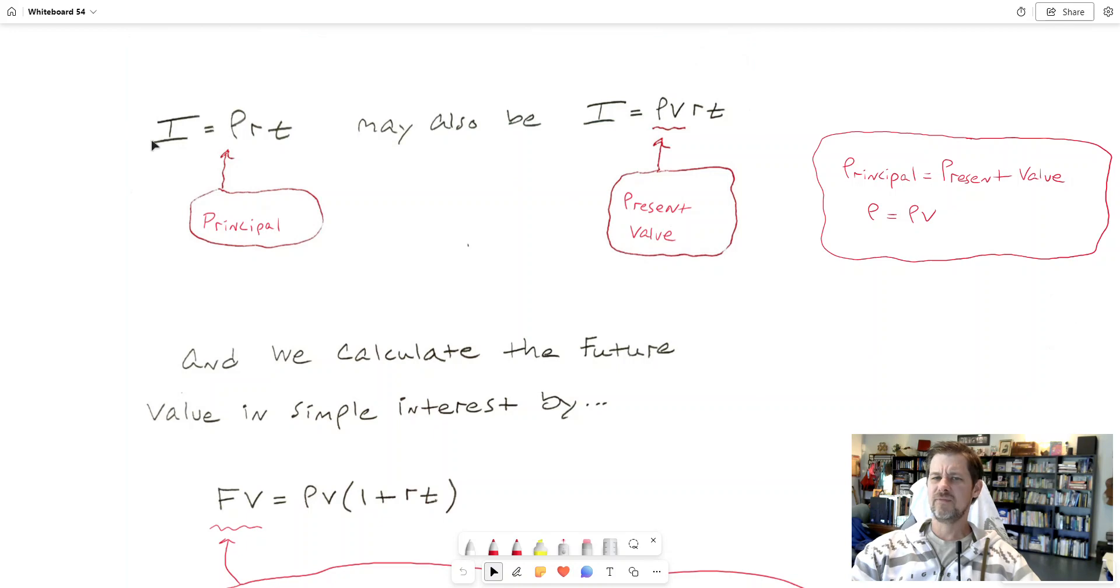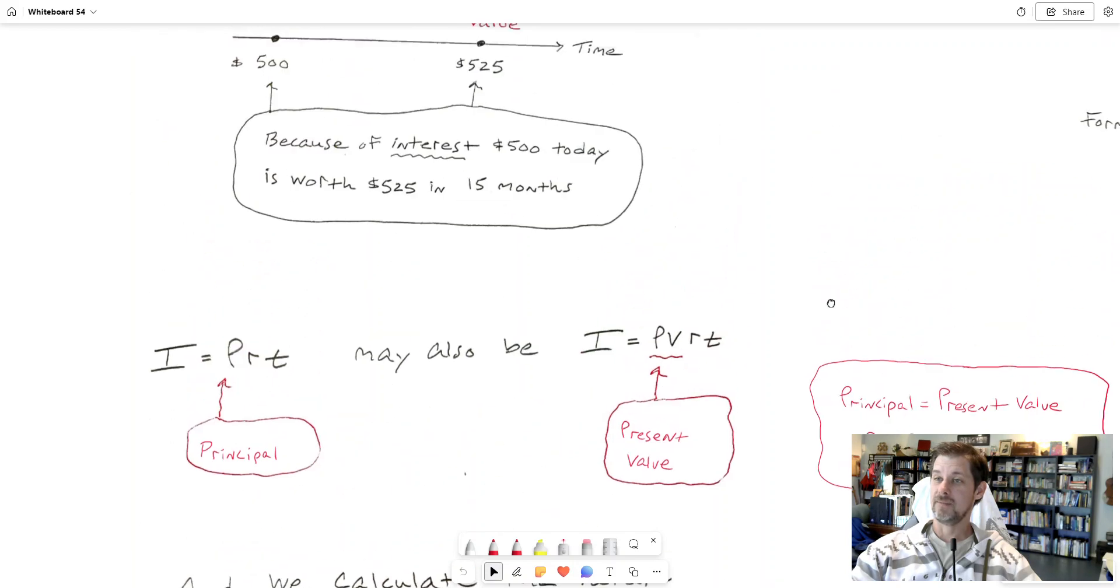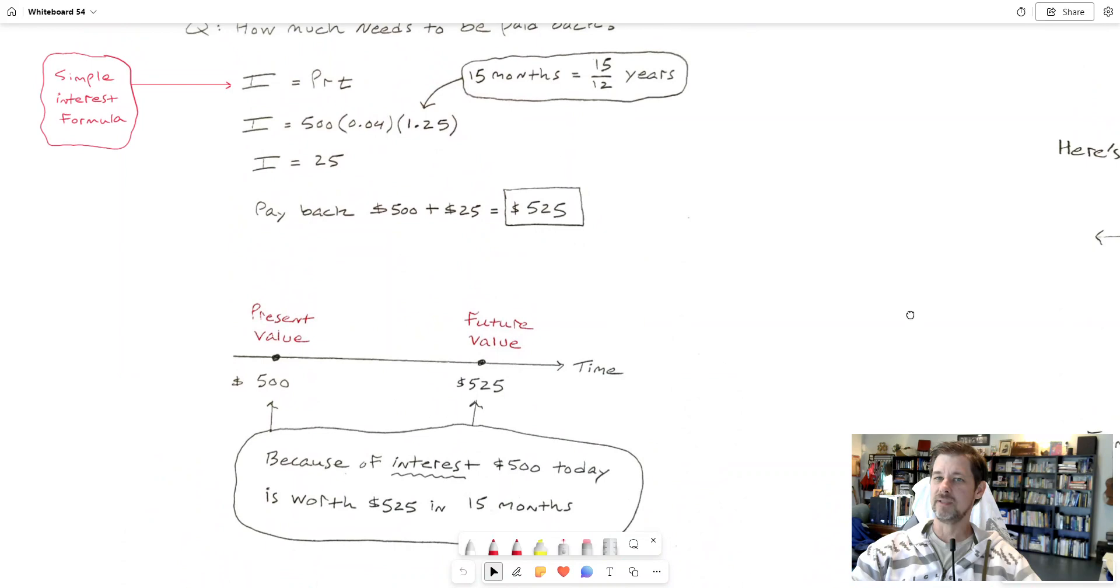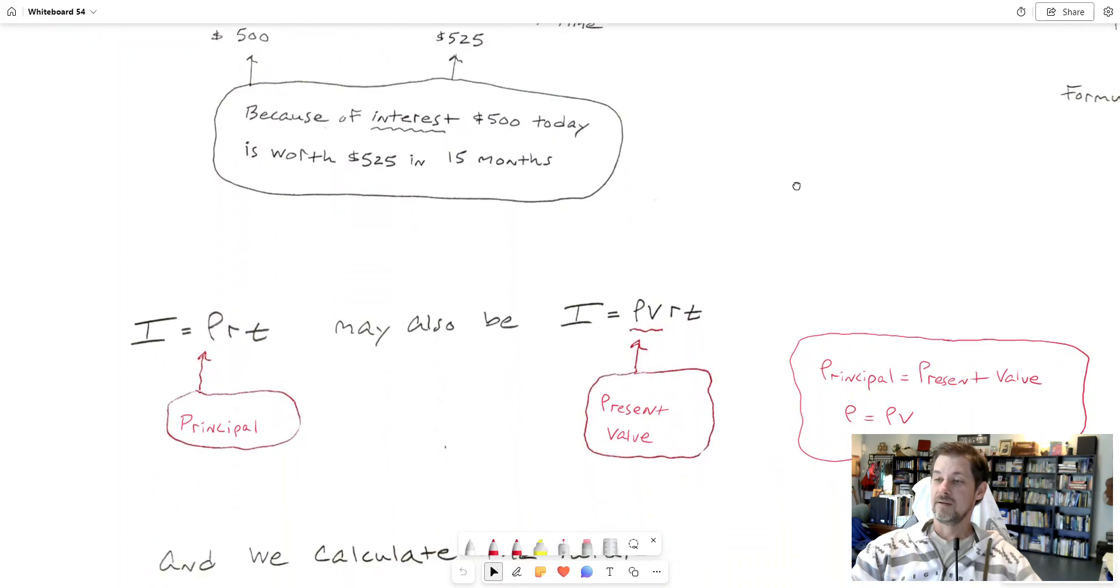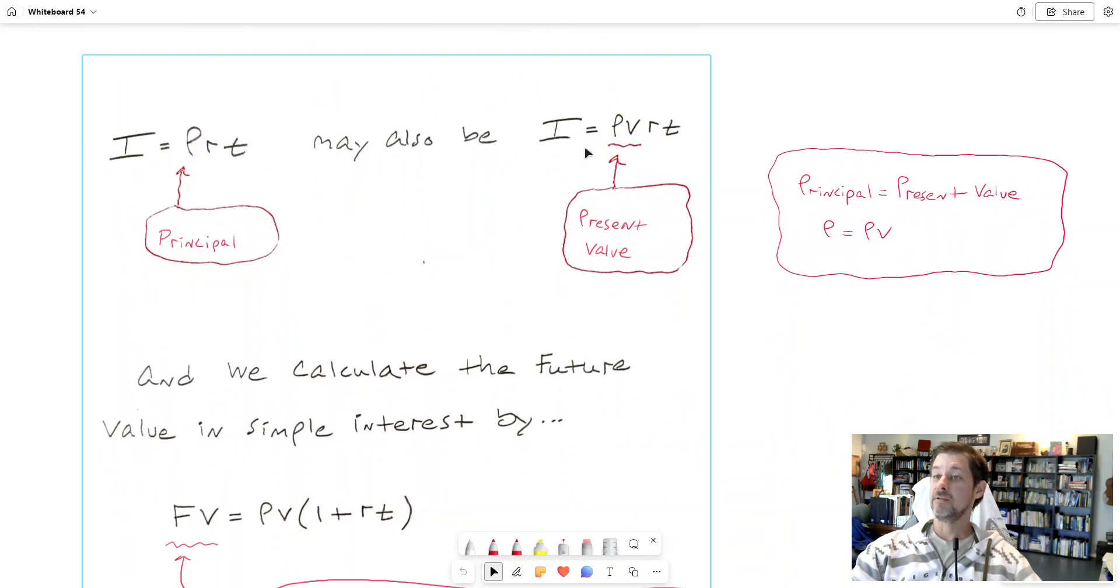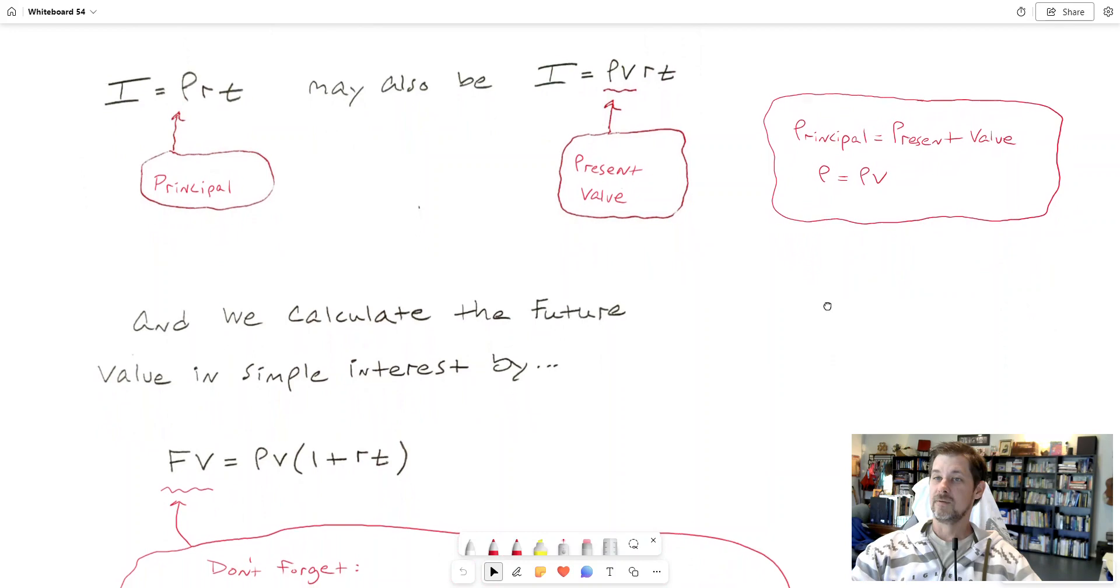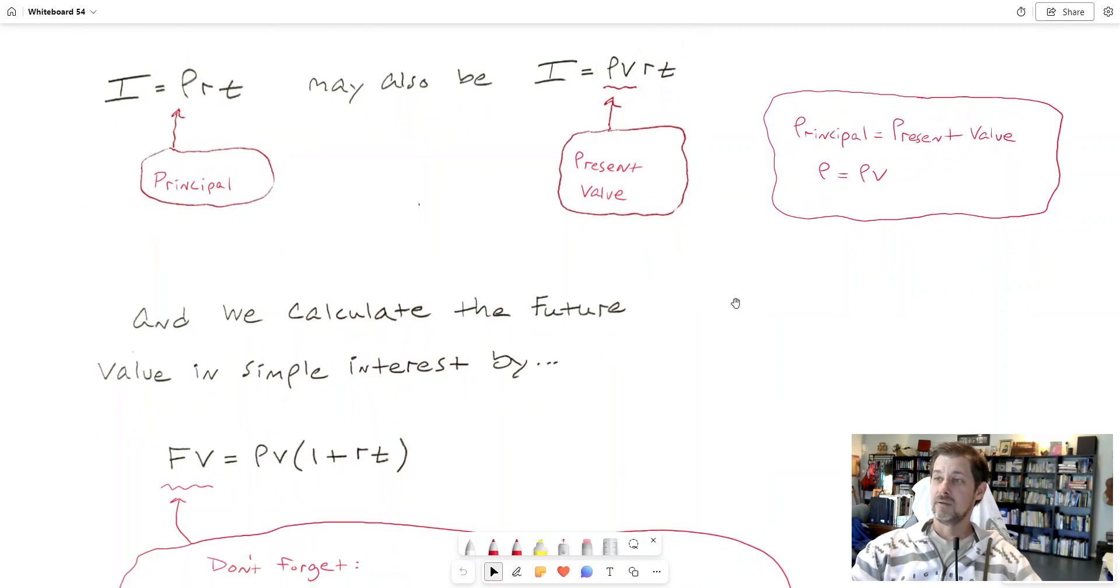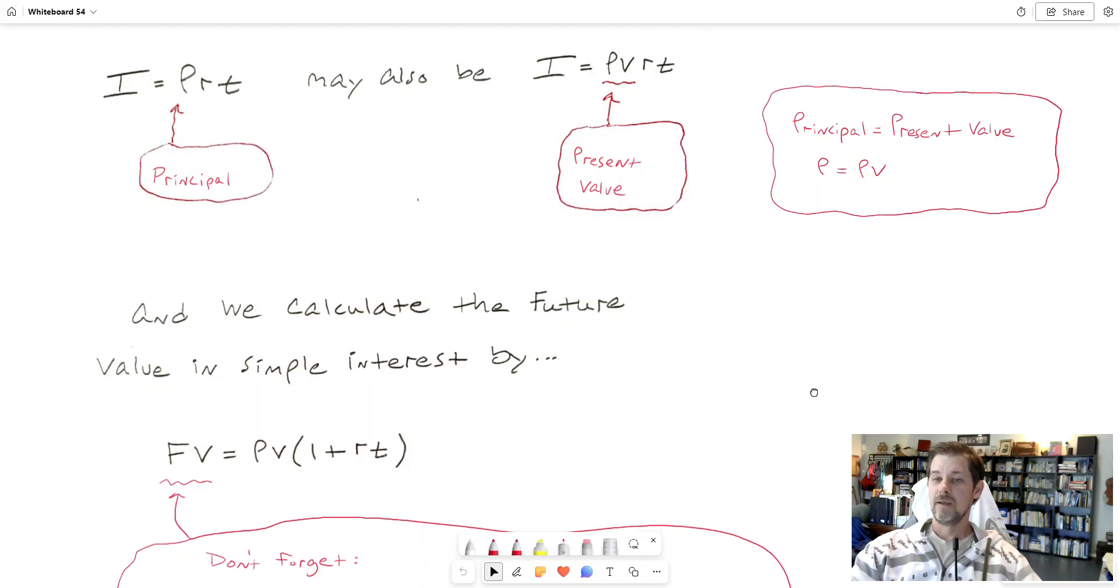So we got the basic idea between present value and future value. One catch is that the formulas may appear different in some of the problems we might see. Interest is principle times rate times time, and I'll refer to P as the principle like I've done so far. But I just told you, the principle is basically the present value, right? In my diagram up here, five hundred dollars, that's what was the principle, that's the amount of money we started with in my example, and so that's what we have today. So this formula may also be written like this: interest is present value times rate times time, or it may be referred to that that number is the present value. They're the same thing.